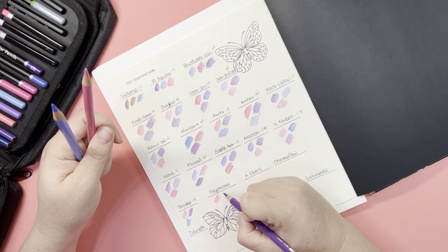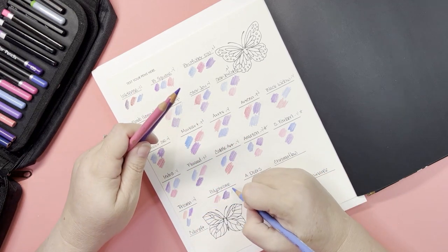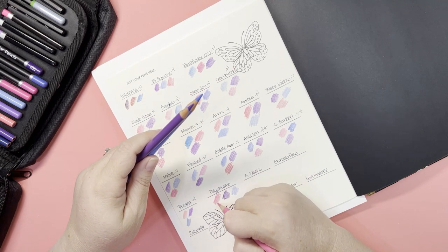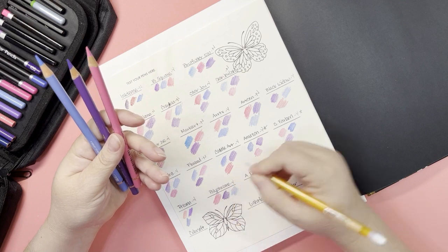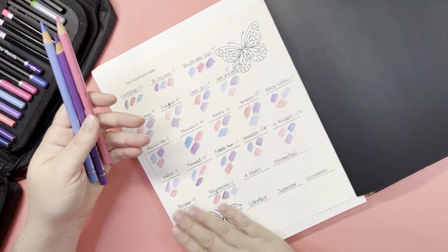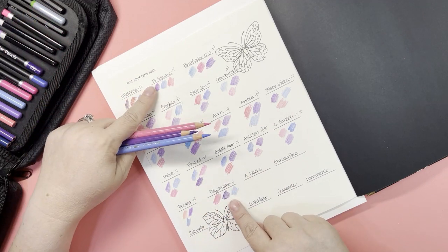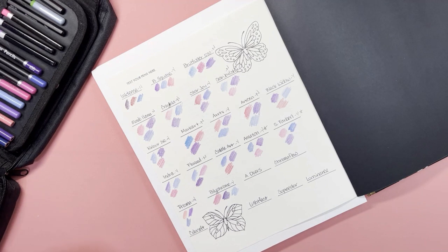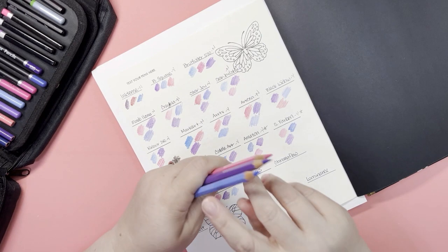Polychromos. Well, these don't feel bad. That one's kind of scratchy. I would use these. At least they glide nicely. They wouldn't be my favorites. I'd say they kind of felt like the Brutfruner squares a little bit.